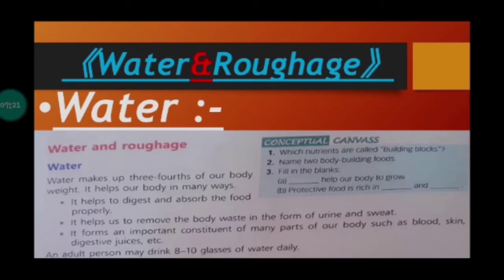Water makes three-fourths of our body weight. It helps our body in many ways. It helps to digest and absorb the food properly. It helps us to remove body waste in the form of urine and sweat. Water forms an important constituent of many parts of our body such as blood, skin and digestive juice.